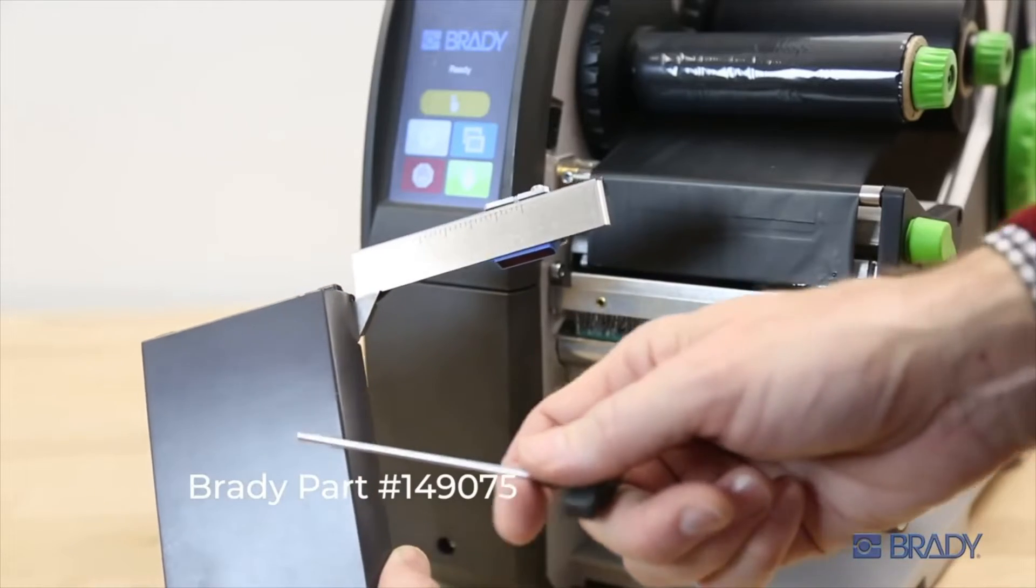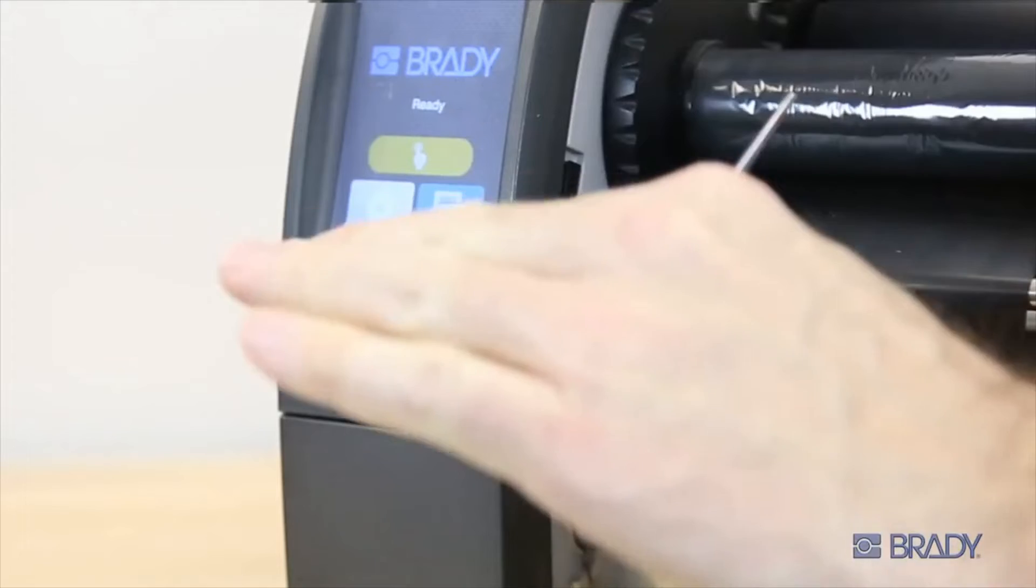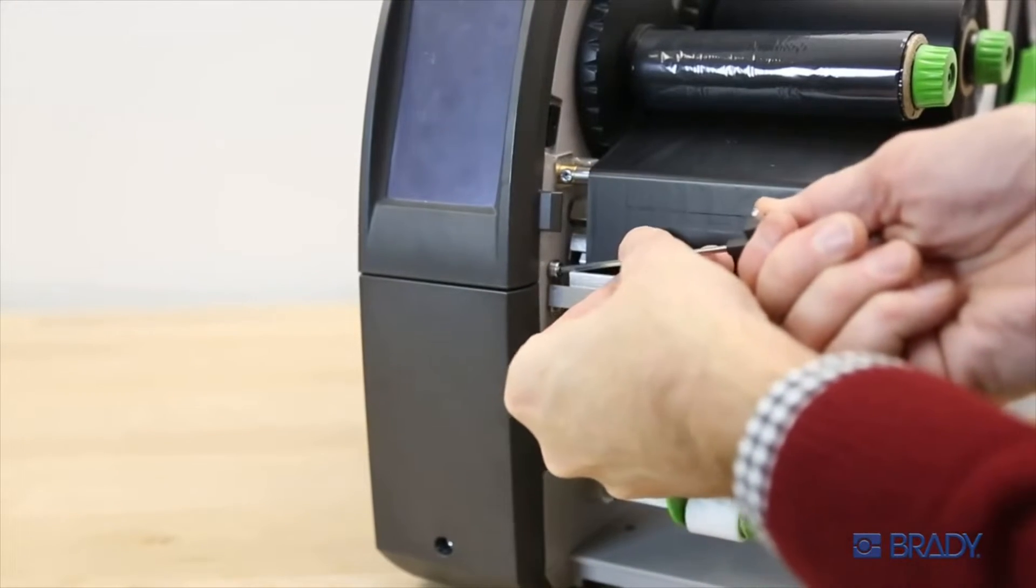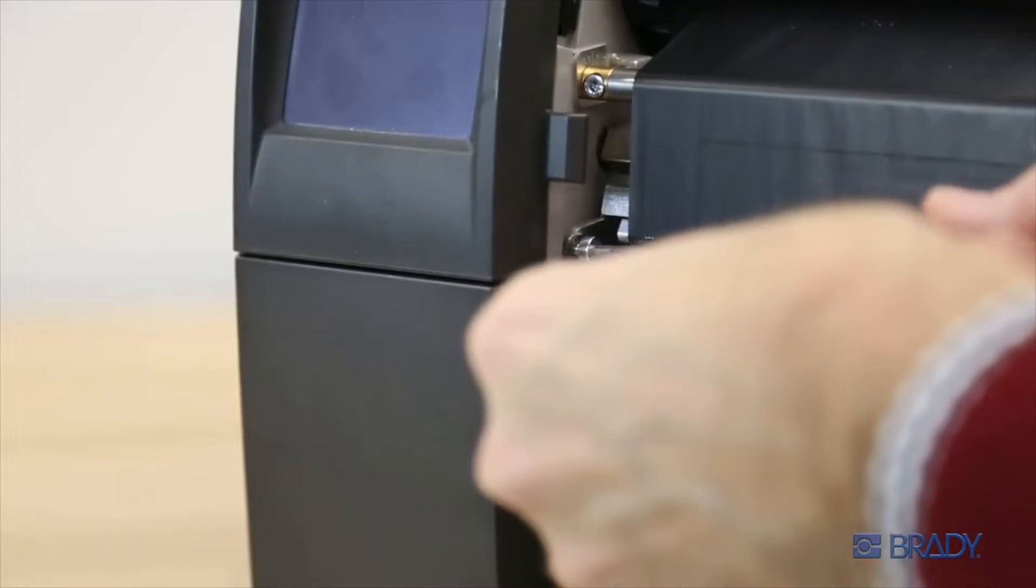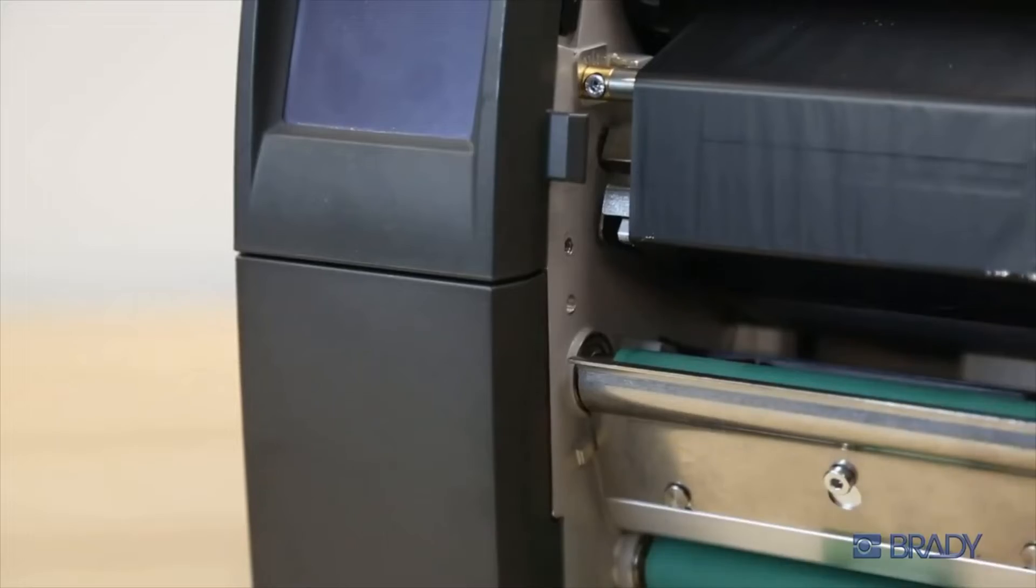To install the present sensor, in this case the PS900, begin by powering off and unplugging the printer. Then remove the anti-static brush, which may interfere with the sensor's light beam. Use the hex key tool to unscrew the anti-static brush and remove the component.